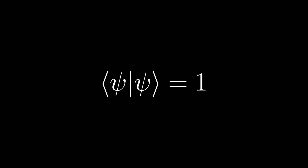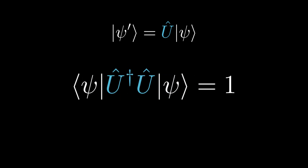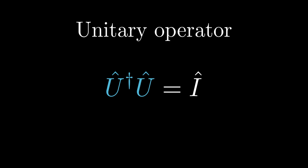We now allow the state to evolve to some other state, ket-psi prime, by mathematically applying some linear operator U. The length of the new ket must remain 1. Hence, we can conclude U-dagger U equals the identity operator. An operator U is said to be a unitary operator if it satisfies this equation. A useful geometric view is that the unitary operator rotates the ket in Hilbert space.